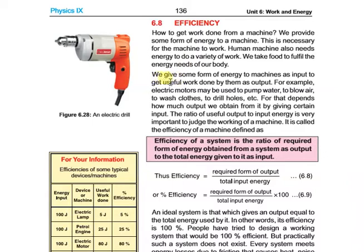We give some form of energy to the machine as input to get useful work done by them as output. For example, electric motors may be used to pump water, to blow air, to wash clothes, to drill holes, and so on. These are all machines we use in daily life.